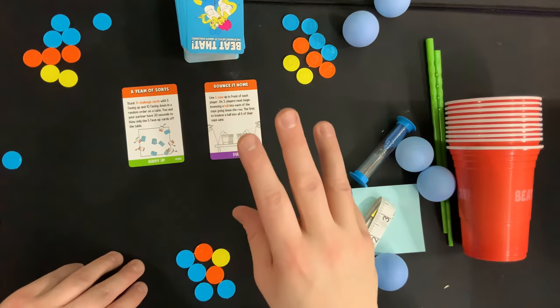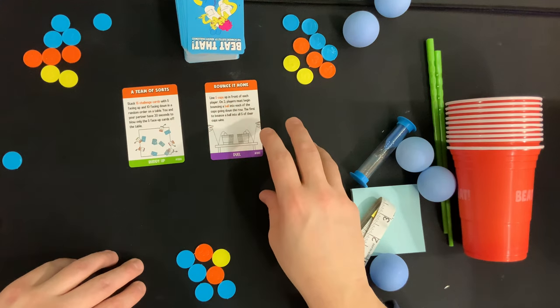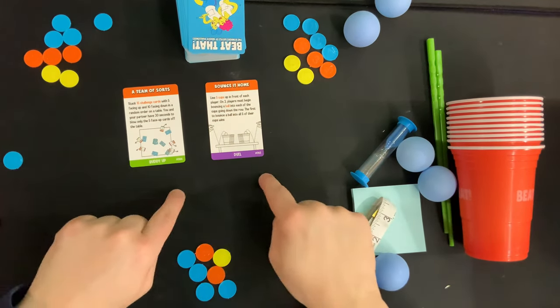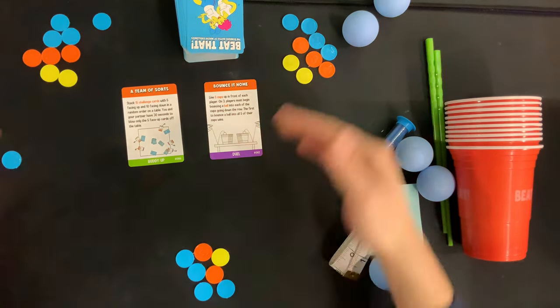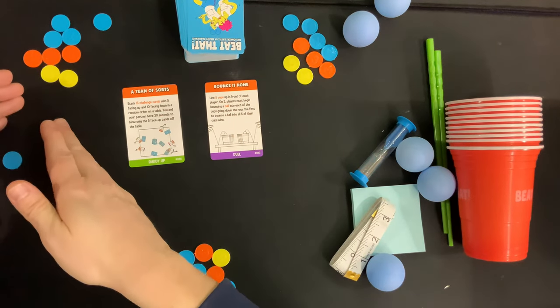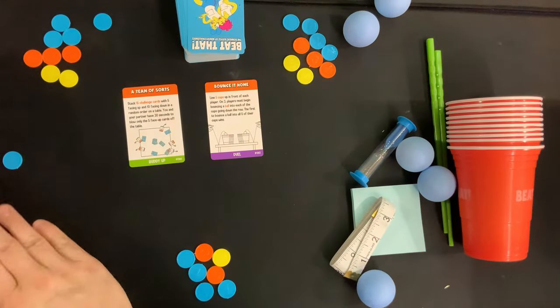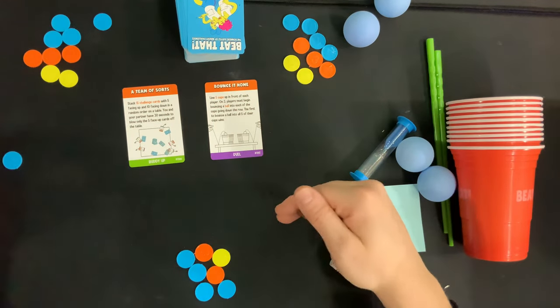What you do is starting with the first player who read the card they are going to pick one other player at the table to be their buddy up or duel partner. Once they've picked that person it then goes to the next player if they were not picked who does the same thing and picks out another player who has not been picked to be their buddy up or duel partner.